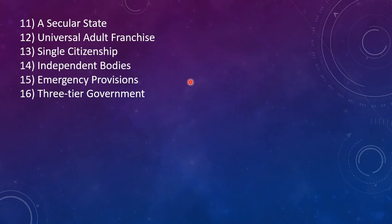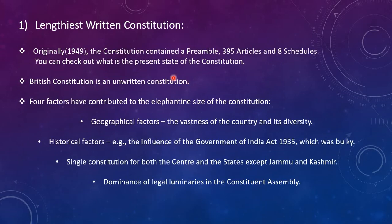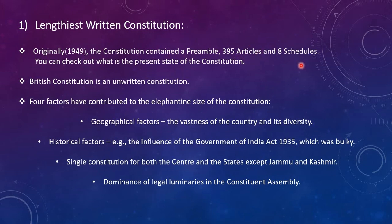The first feature says that Indian Constitution is the lengthiest written constitution. Originally, that is in 1949 when we adopted our constitution, the constitution contained a preamble, 395 articles and 8 schedules. Throughout the years, a drastic change has happened in our constitution — you can check out what the present state of the constitution is and comment in the comment box below.